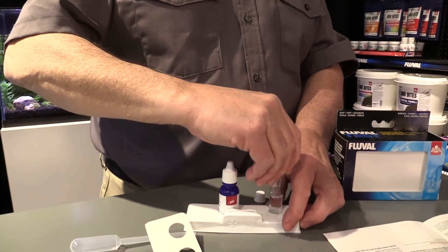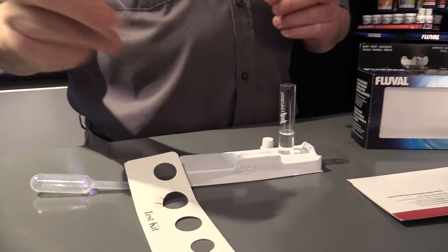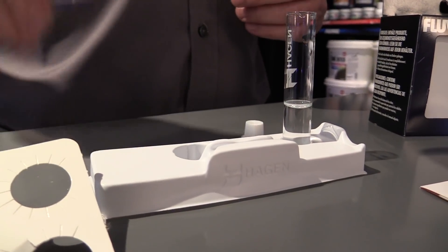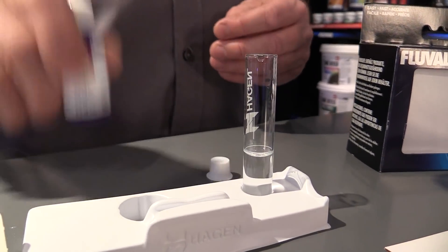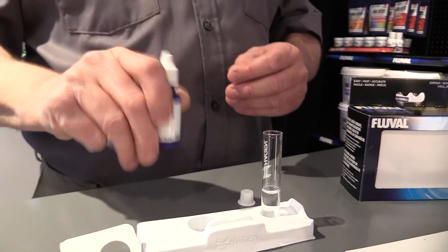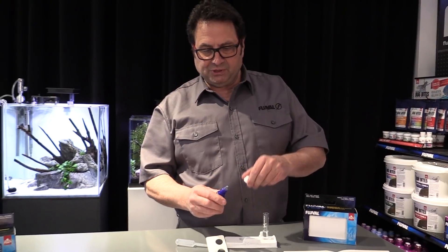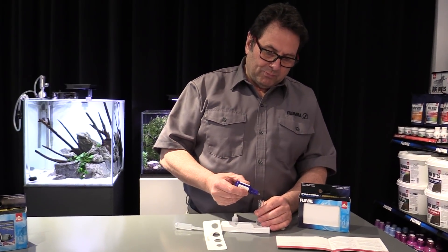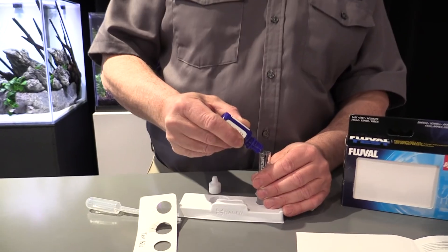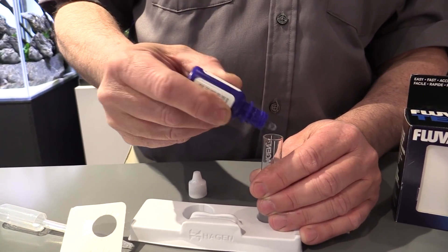We're ready to go with the test. We just insert that into the base over here, hold steady. Shake the reagent really well - that's always the case, and some reagents have to be, it's an extremely important step. In the case of pH, a couple of shakes is usually sufficient. Now in this case we're going to be putting in two drops according to the instructions, so here you go - one, two.